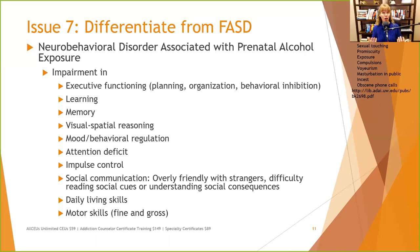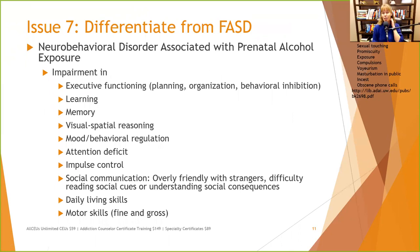They have difficulty interpreting nonverbal communications and respecting other people's space, and difficulty inhibiting their own behavior — if they want to give you a hug, they're going to give you a hug. Inappropriate touching is very common, and sexual touching, promiscuity, exposure, and certain compulsions are also very common in people with FASD. This doesn't mean the person is trying to be mean, antisocial, overly sexual, or histrionic — it means they have impulse control issues.